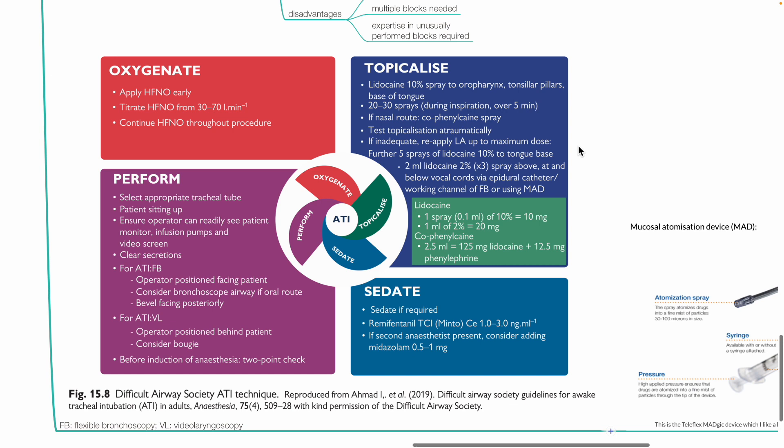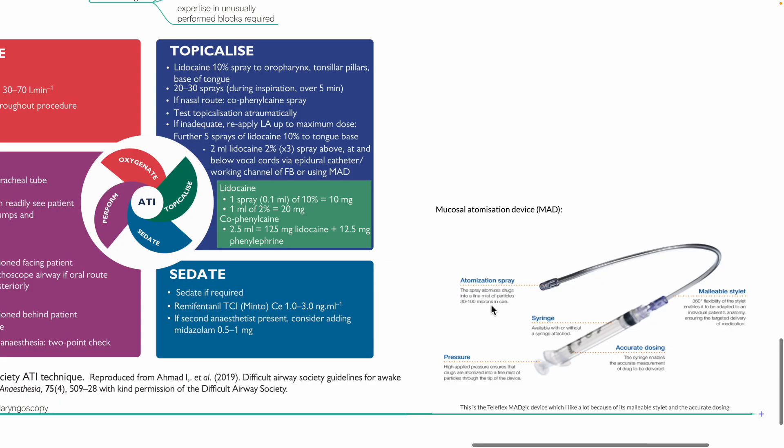Further 5 sprays of lidocaine 10% to the tongue base. 2 mL lidocaine 2% times 3 spray above, at and below the vocal cords via epidural catheter or working channel of flexible bronchoscope or using a mucosal atomisation device. This device enables atomisation of particles to 30 to 100 microns in size.